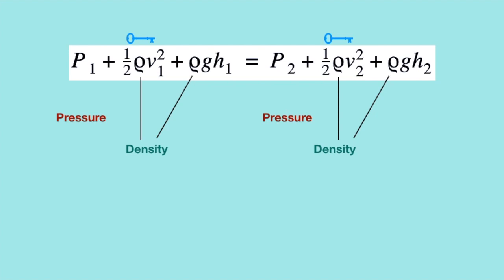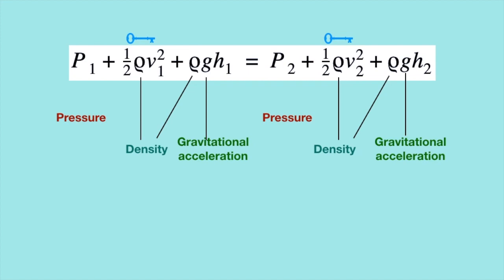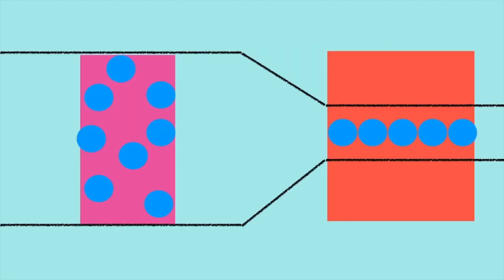Small g is the gravitational acceleration of Earth, which is 9.8 meters per second squared, and g is unchanged as the air goes from the wide to the narrow pipe since we didn't change gravity. H stands for height, and in our example there is no rise or fall in height from left to right, so height stays fixed. It's true that air particles going through the constriction zone change height slightly, but we take the mean average position.